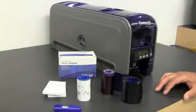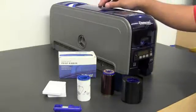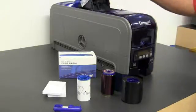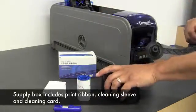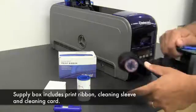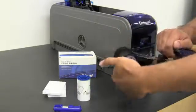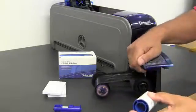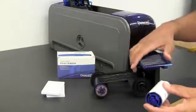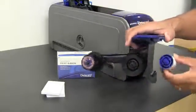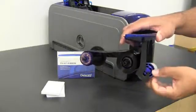After you unpack the printer, you want to load the supplies. The first step is to open the print cover and install the supplies and cleaning sleeve. Remove the supplies cartridge, place your ribbon on the cartridge, place your cleaning sleeve on the spindle, install the spindle, and remove the cover.